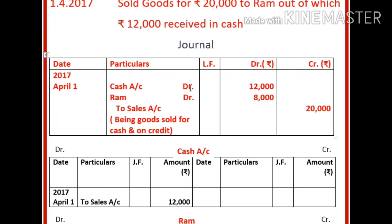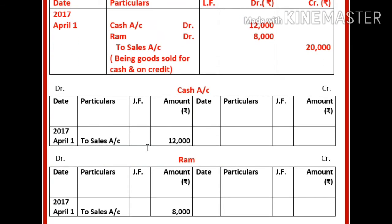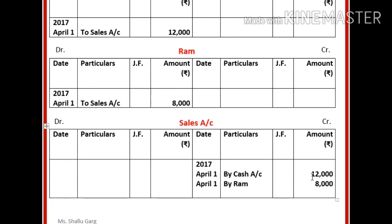Both accounts — cash and RAM — are being debited, and they are being debited against sales account. So in the cash account as well as in the RAM account, under particulars we will write 'to sales.' Cash is getting a debit of 12,000 and RAM account gets a debit of 8,000. Now in the sales account, there is a total credit of 20,000 received from two accounts — cash account and RAM account. So in the sales account you will write: 'by cash account 12,000, by RAM 8,000.' This is how you post the transaction from journal to Ledger.